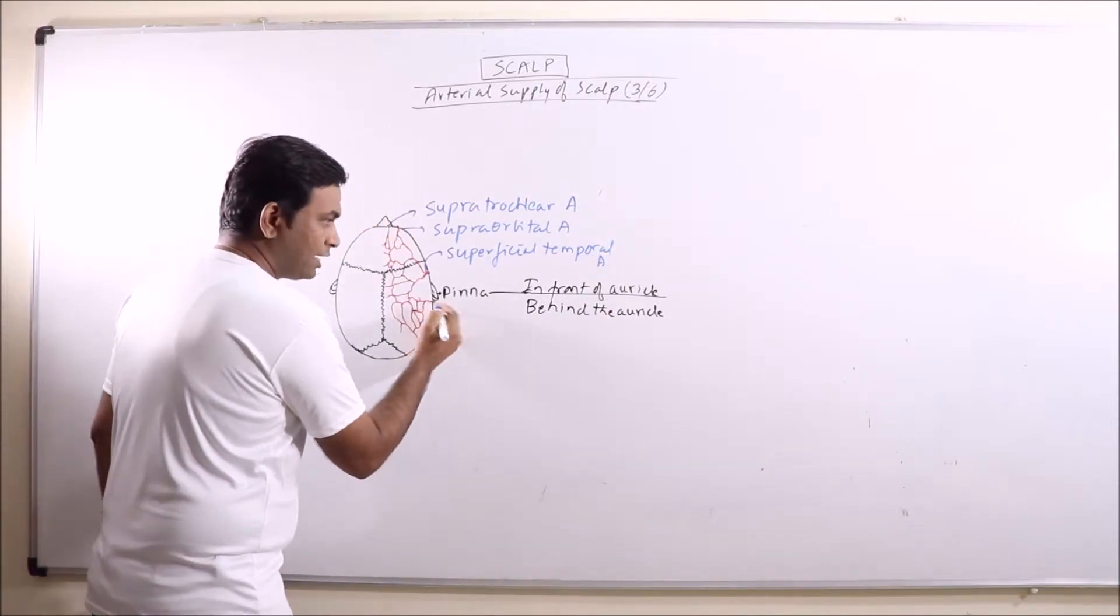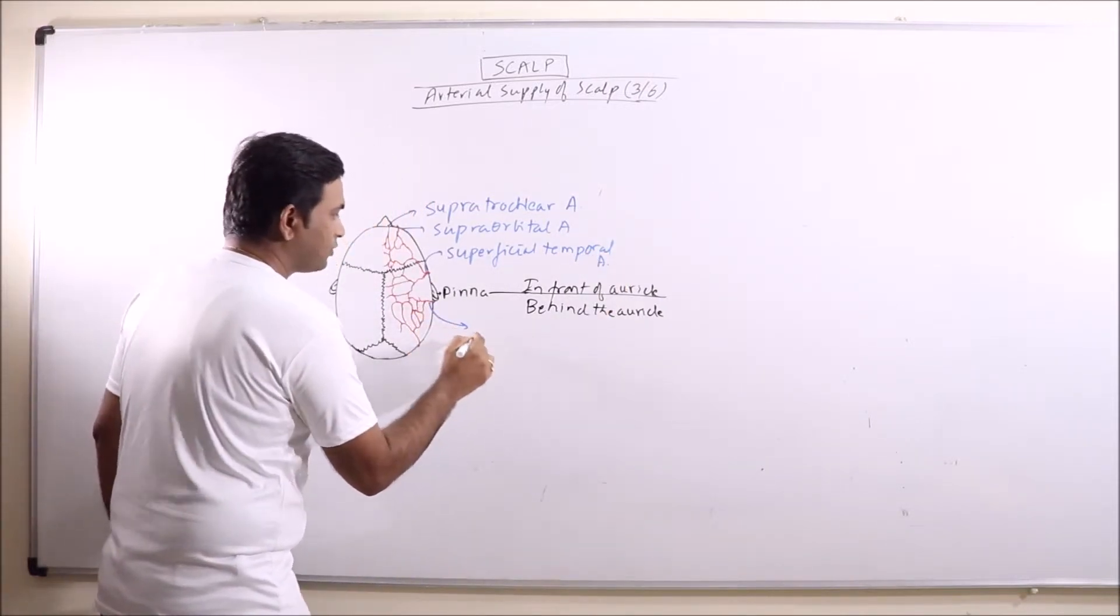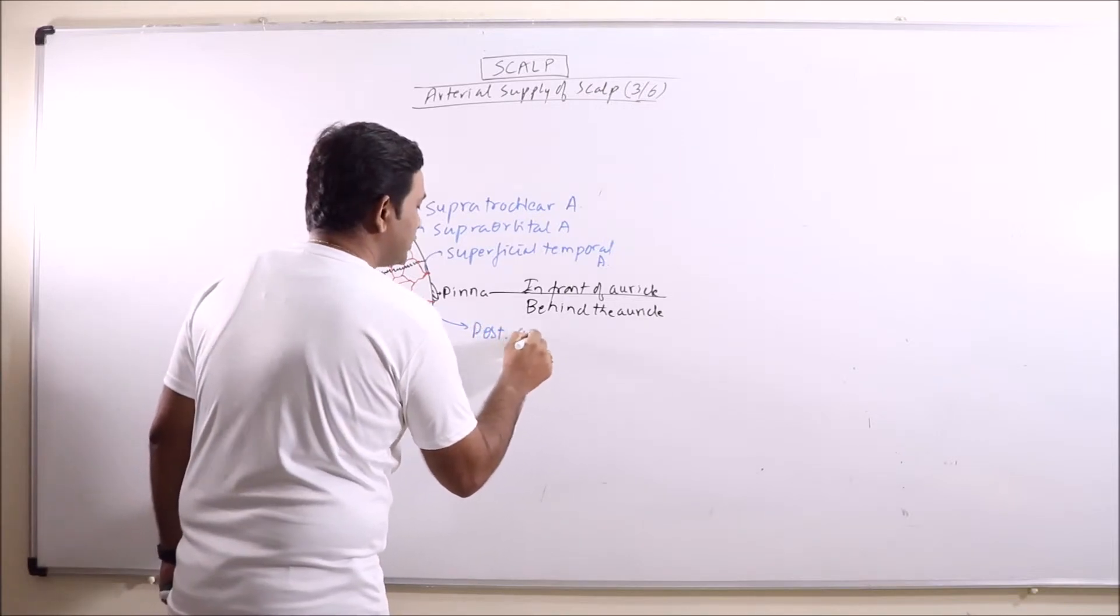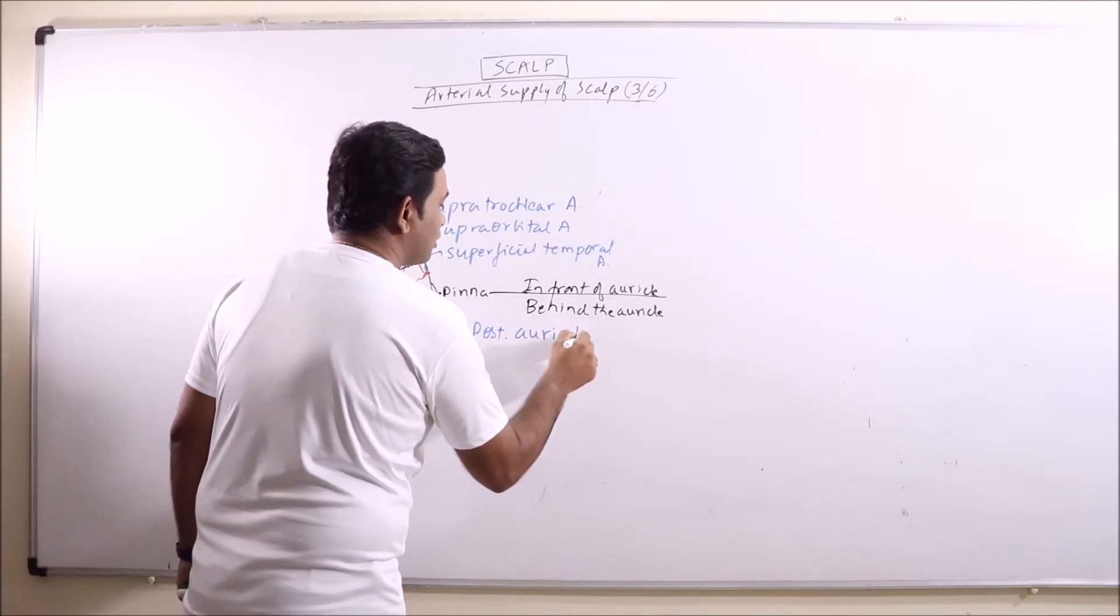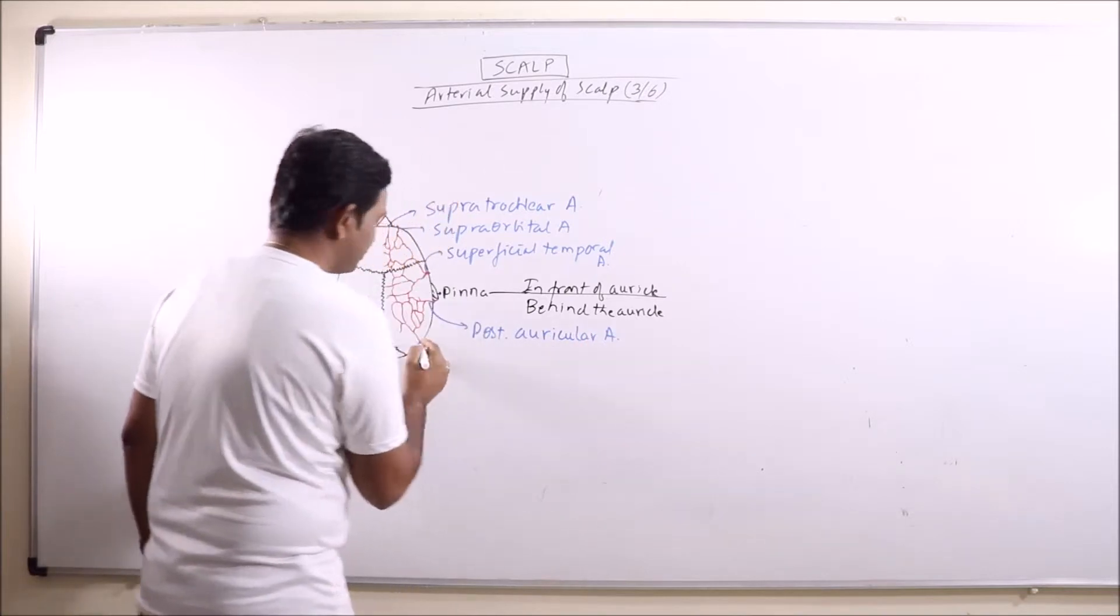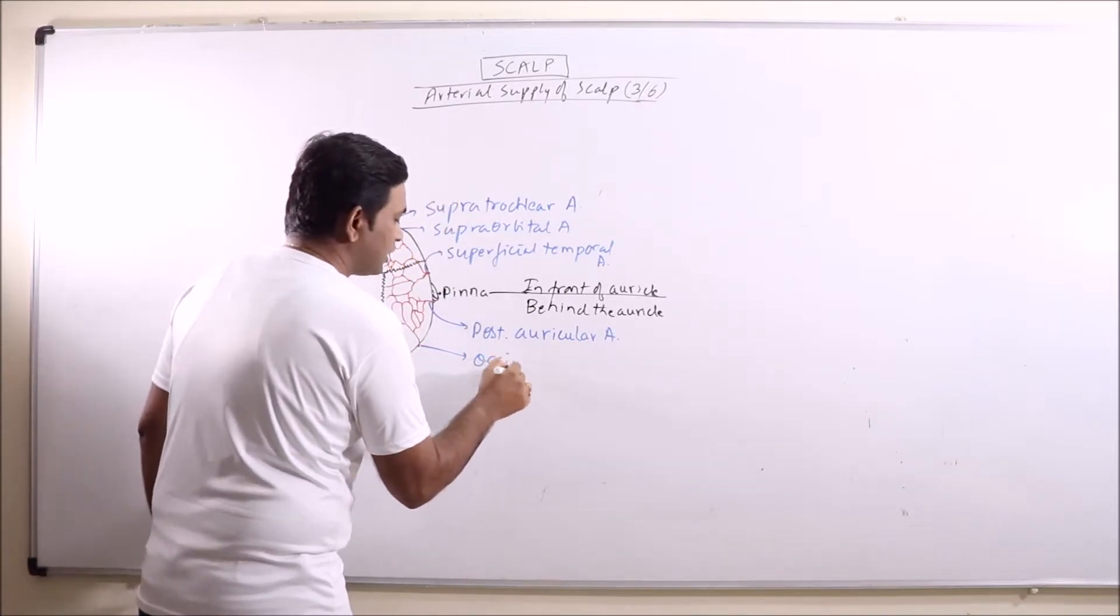And behind the auricle, two major arteries are posterior auricular artery and occipital artery.